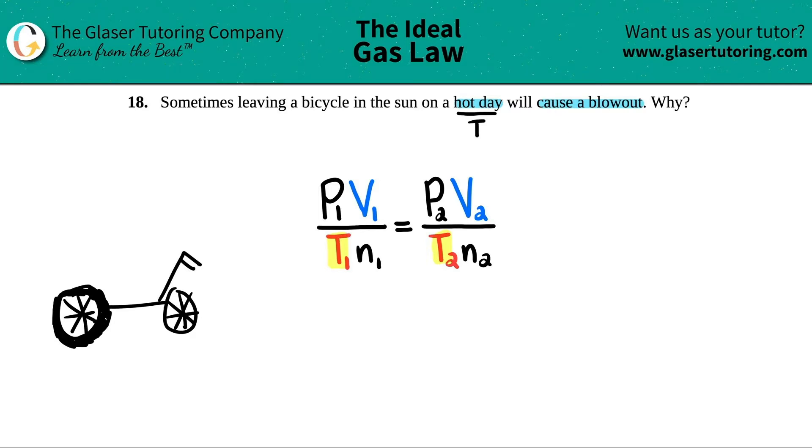It's going to cause a blowout. In essence, what happened to the bike? Pressure, volume, or n stands for the number of moles. Can you describe what happened to the tire in either the pressure or the volume? We could say either two things here.